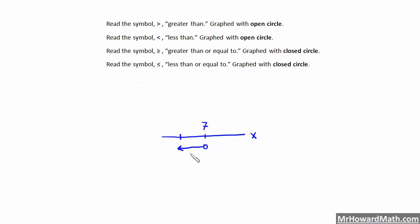Now suppose you're given a number line graph and asked to write the inequality statement. We see the number line labeled x with the value 7, an open circle, and the arrow pointing left. This means we do not include 7 but include everything to the left. Since there is an open circle, we use strict less than — no equal to. The inequality statement is x is less than 7.